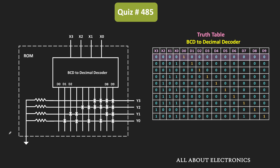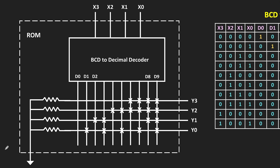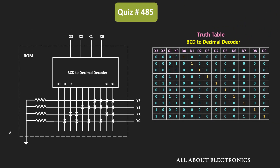Whenever the input code is 0000, the D0 output will become high. Likewise, when the input is equal to 1001, the D9 output will become high. The outputs of the decoder are interconnected with the output lines, and based on this interconnection, a specific logic function gets implemented.